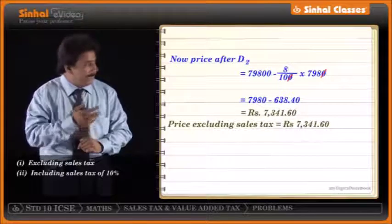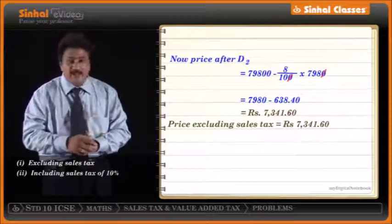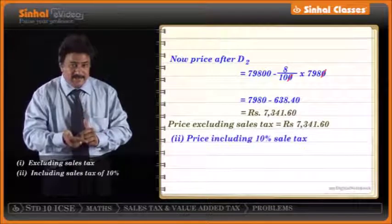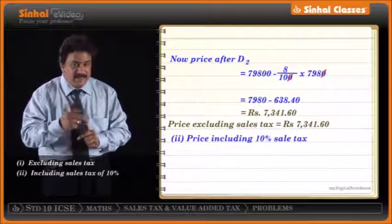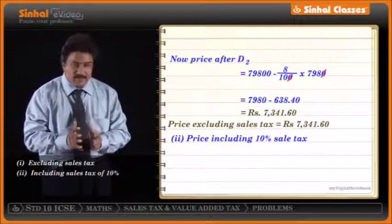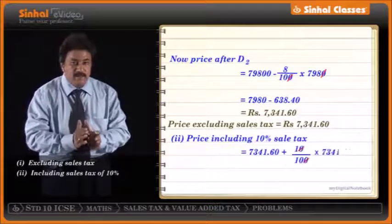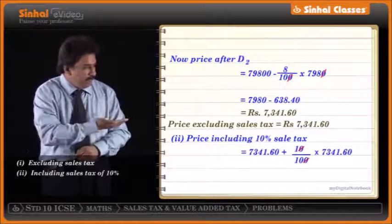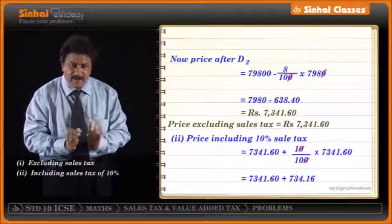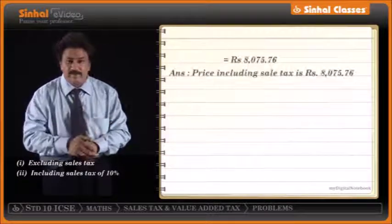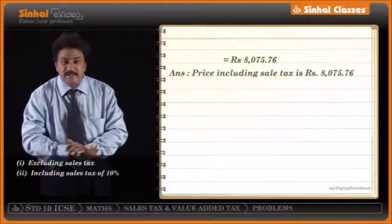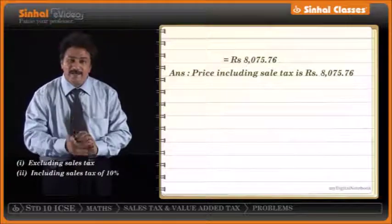The second part of the question: find the price including sale tax of 10%. Price after second discount plus 10% of that price = 7341.60 plus 10% of 7341.60 = 7341.60 plus 734.16 = Rs. 8075.76. So Rs. 8075.76 is the selling price which includes sale tax of 10%.